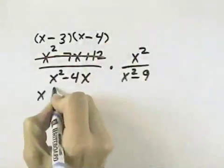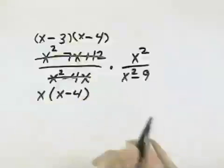In the denominator, we have a greatest common factor of x, and if we divide that out, we're left with an x minus 4.